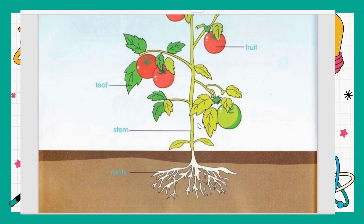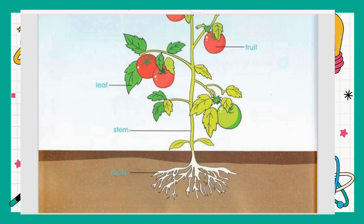The stem and roots are the most important body parts of the plant. If a plant doesn't have roots, it cannot grow — it cannot have fruits, leaves, or branches. If it doesn't have a stem, the plant also cannot grow. Roots absorb water from the soil. For growing plants, two things are very important: sunlight and water.